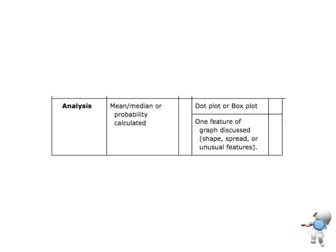Okay, so in terms of what we need for our marking schedule here. To get to our achieved part of it, we need to have a mean or median or probability calculated. So just getting the graph from NZ Grapher with the mean or median on it, that gets you that part. For the merit, then we want to have our dot plot and at least one feature of that graph discussed. So shape, center, or spread.